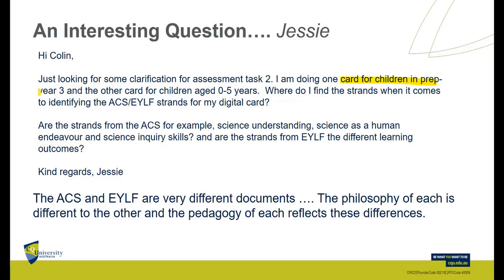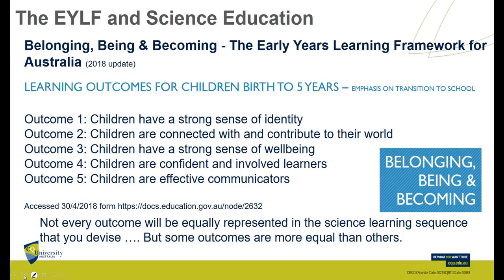An interesting question came from Jessie. She's doing one card for prep to three and a second card for zero to five, and her question is: where do I find the strands when identifying the ACS and EYLF strands for her digital card? She then answers her own question — are the strands from the ACS, for example, science understanding, human endeavour, and inquiry skills, and are the strands from the EYLF the different learning outcomes? The answer is yes. The strands used for the ACS are ACS strands; the EYLF strands are in fact the learning outcomes.